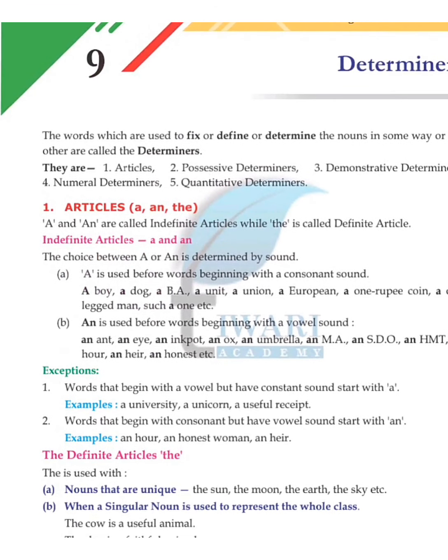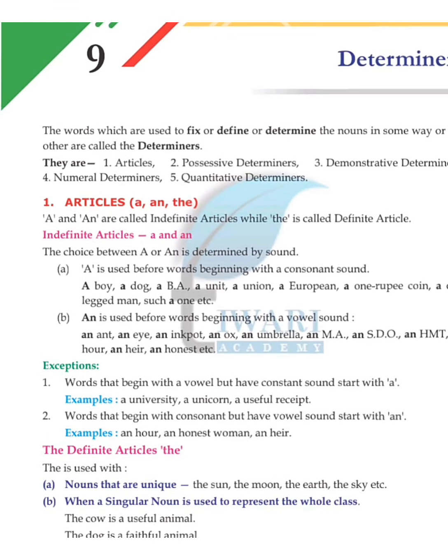Let's see articles: 'a' and 'the'. These are called articles. 'A' and 'an' are called indefinite articles — listen carefully — while 'the' is called the definite article. The choice between 'a' and 'an' is determined by sound.